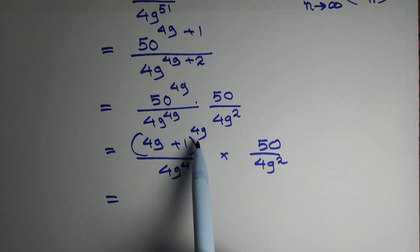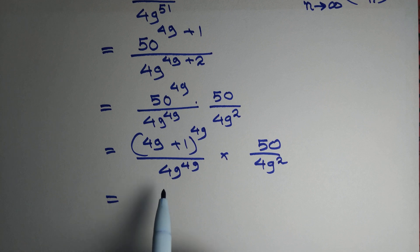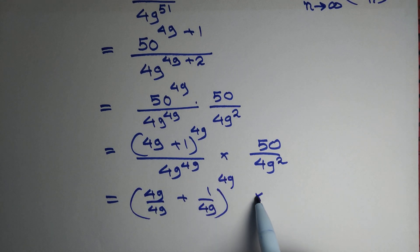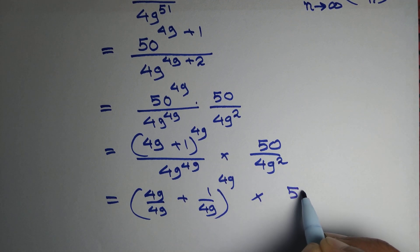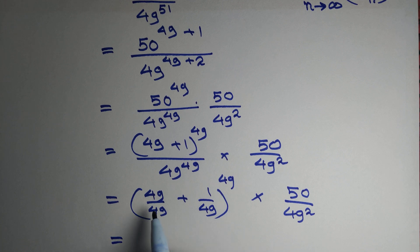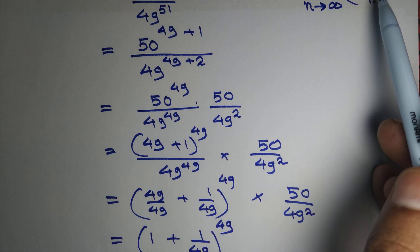Since the power remains the same, we can write this as (49/49 + 1/49)^49, which is (1 + 1/49)^49, multiplied by 50 divided by 49².